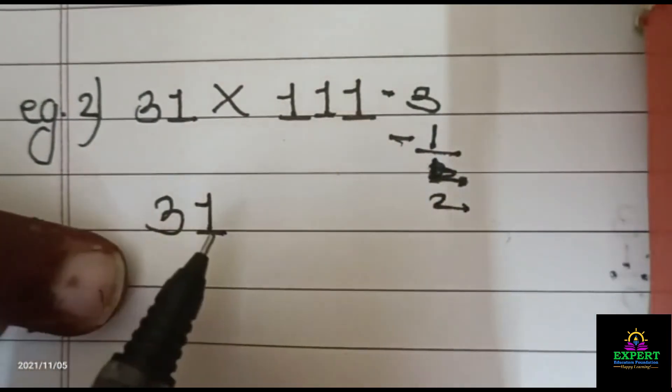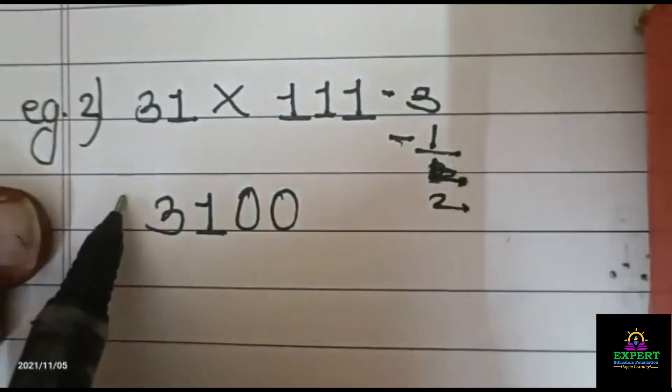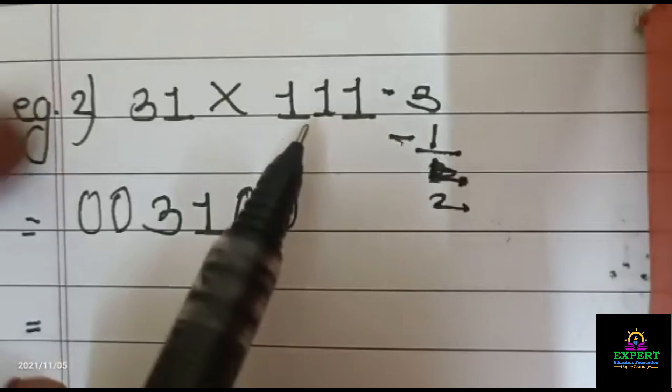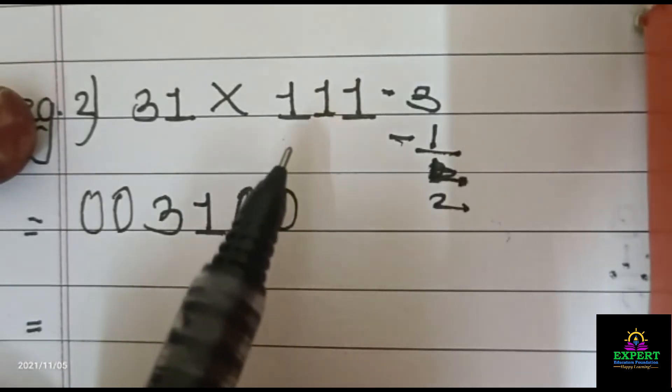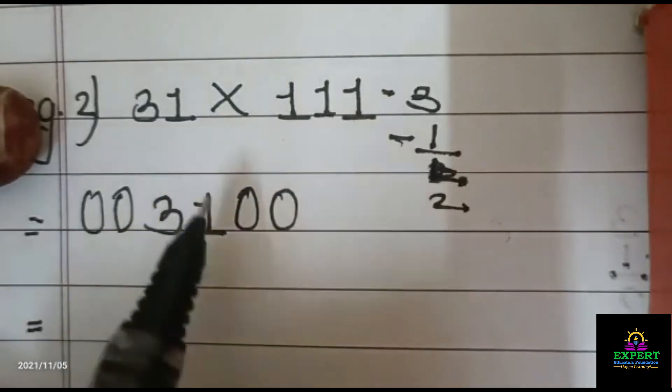So just I will write 31 as it is, and just put 2, 2 zeros at front and backward. So now here is a 3 digit number, so I will add these numbers by 3, 3 numbers.